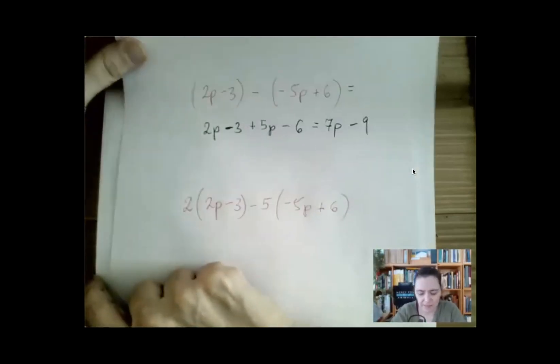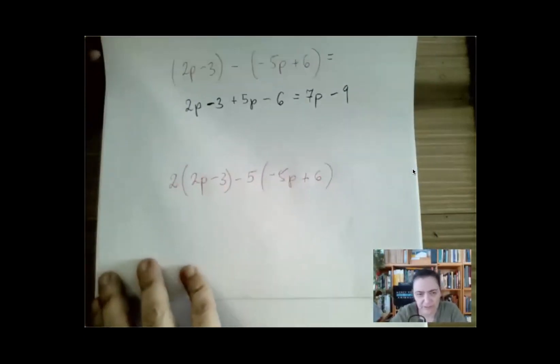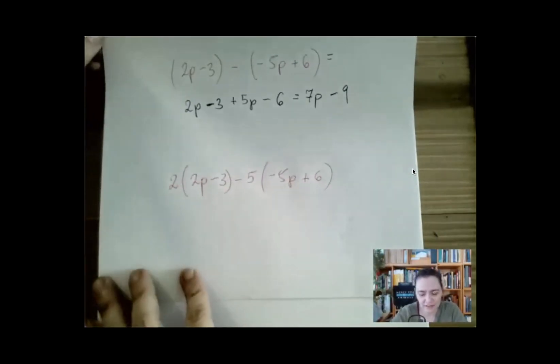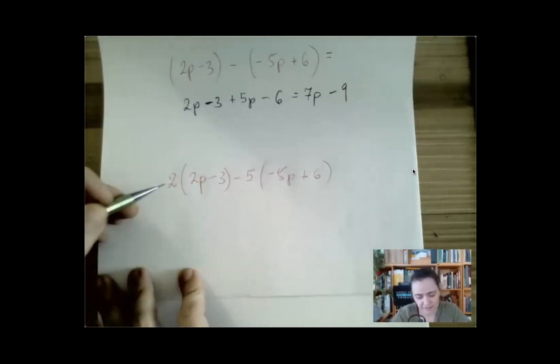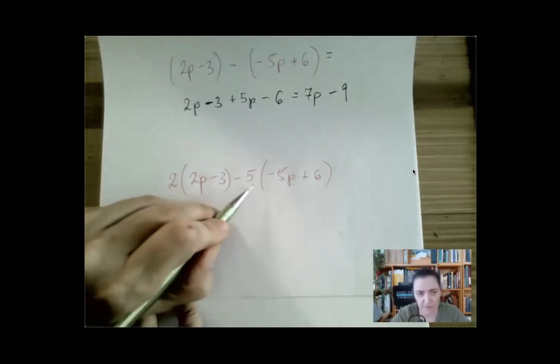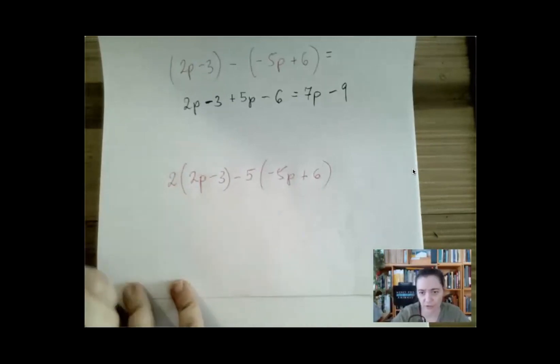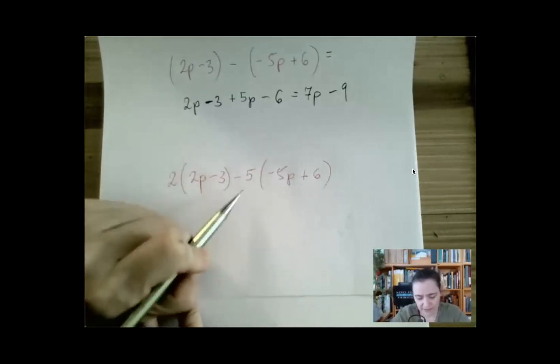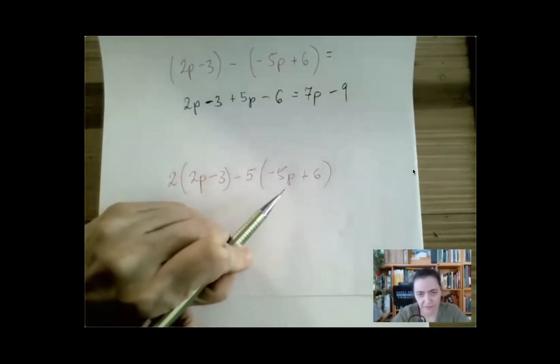OK, and this last example I call it a linear combination. It basically means we multiply one thing by a number, the other thing by a number, and then we add or subtract. We multiply the first expression by 2, we multiply the second expression by 5 or subtract. Or it might be helpful to think of the second part as we distribute negative 5.